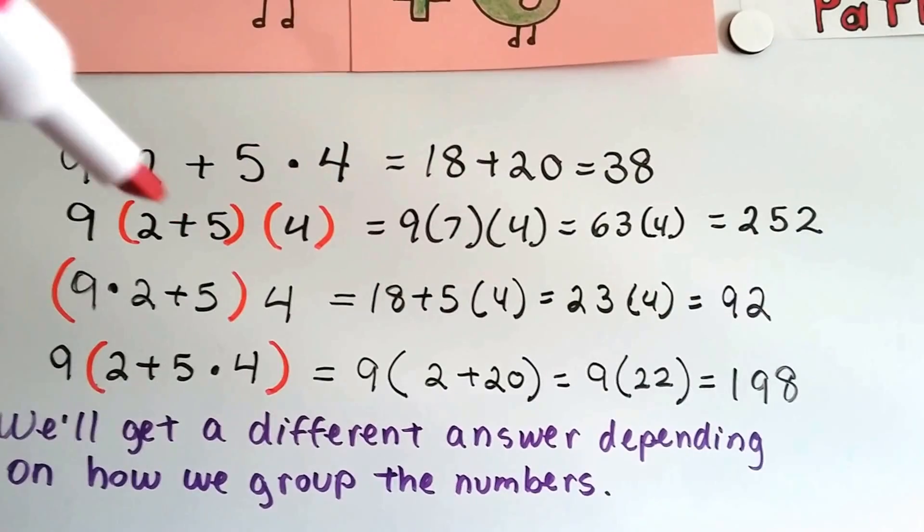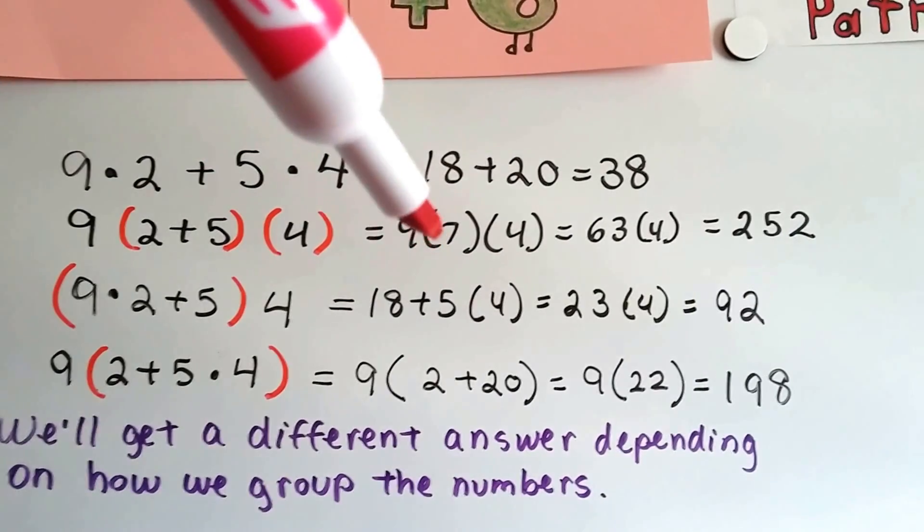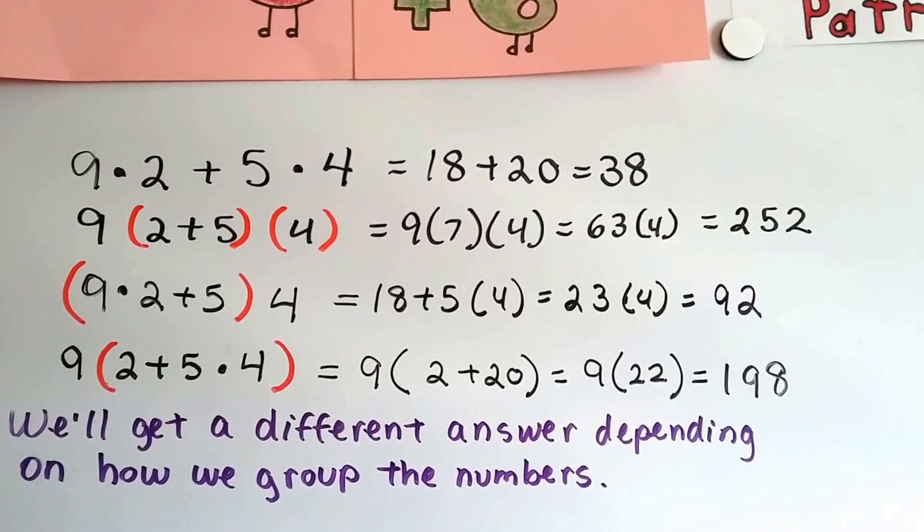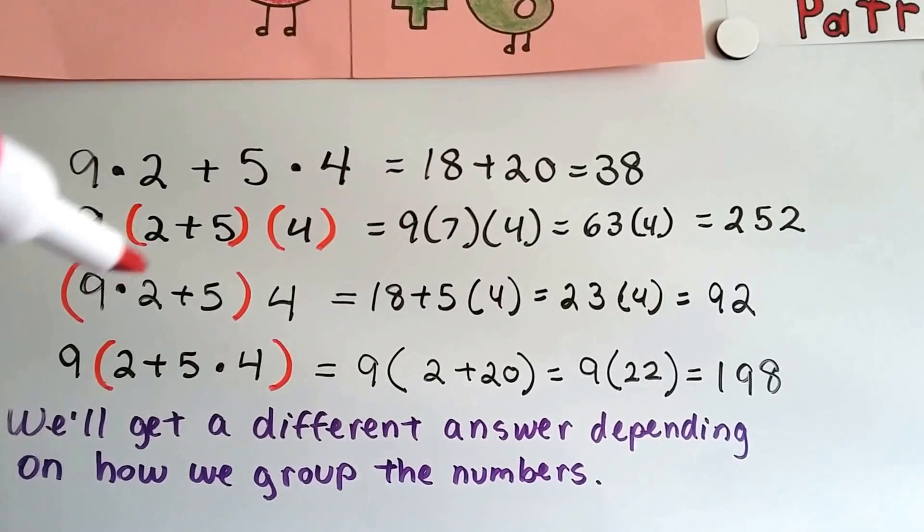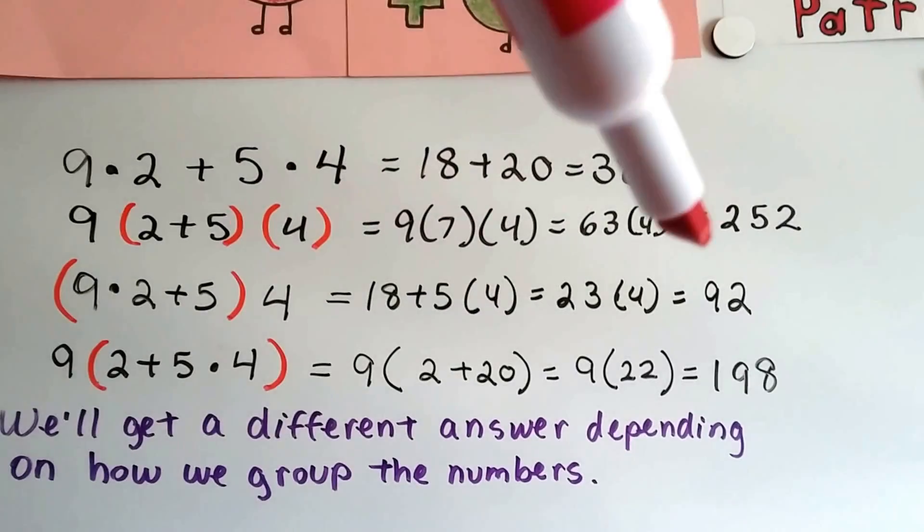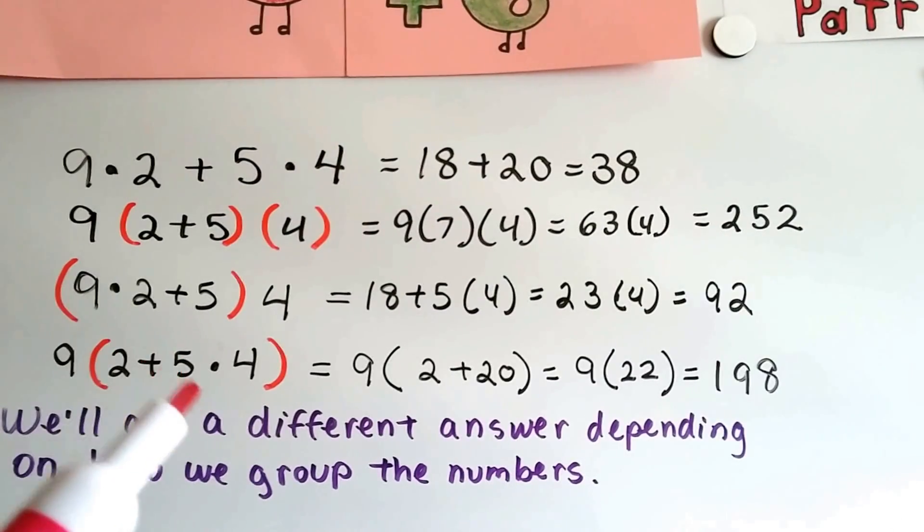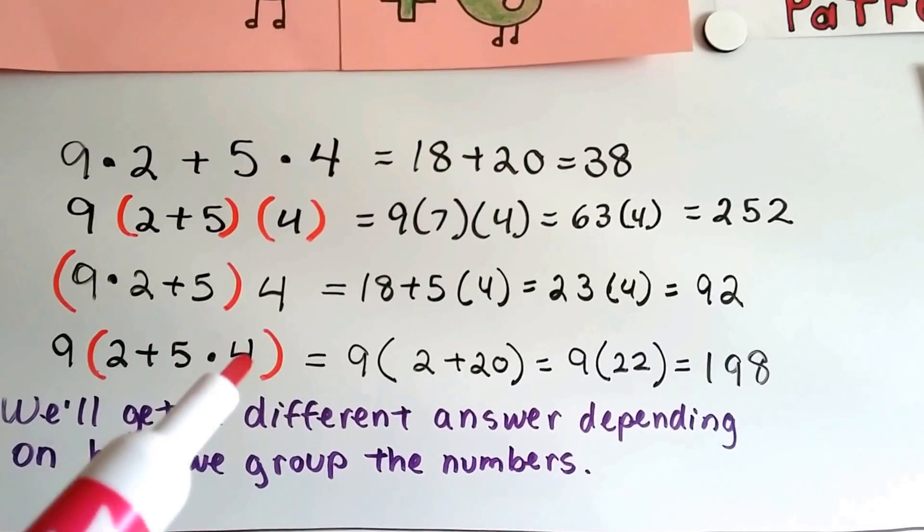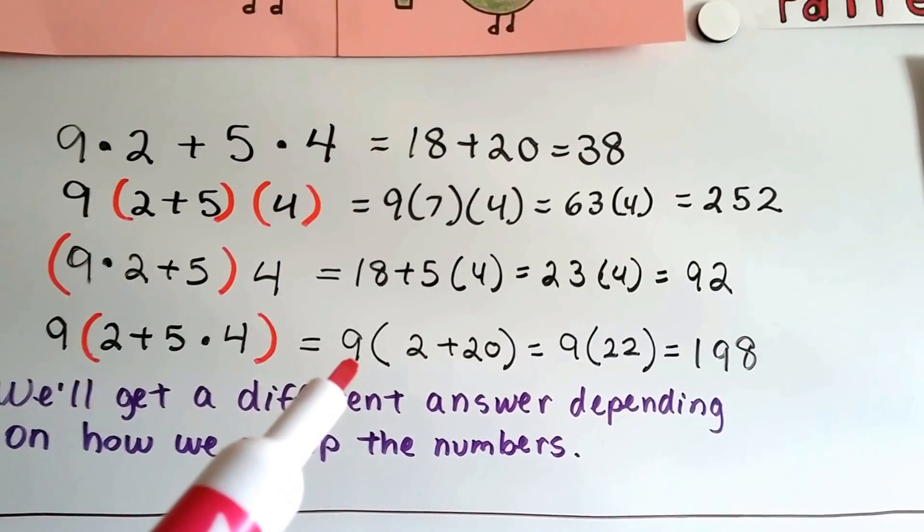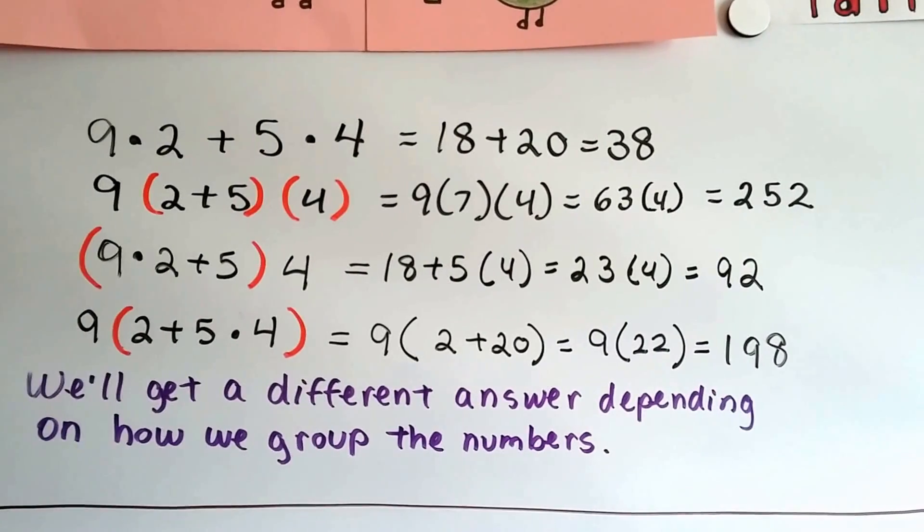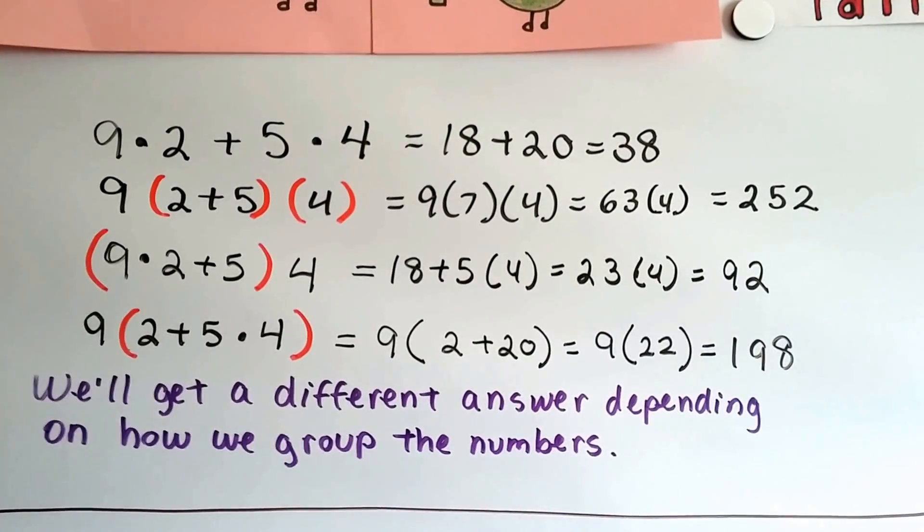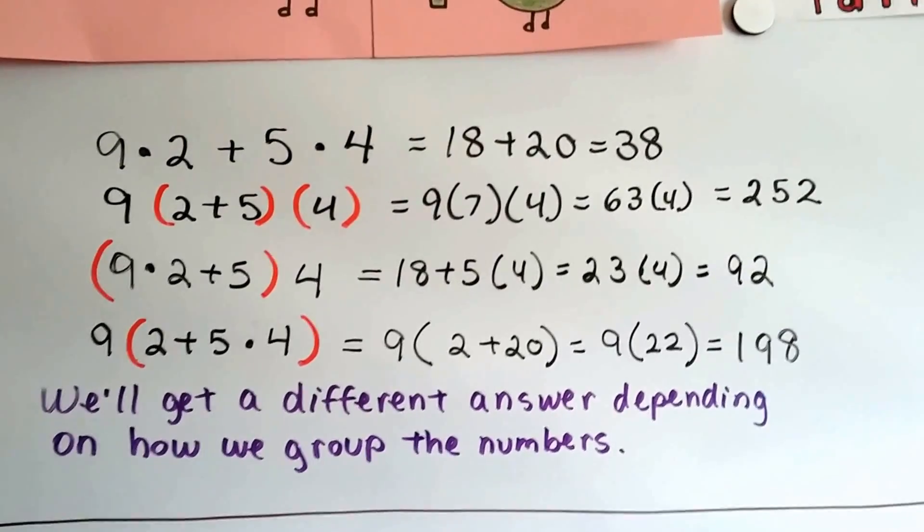2 plus 5 is 7. Now we have 9 times 7, which is 63. We multiply that by 4, we get 252. When we have 9 times 2, which is 18, and we add 5, we get 23 times 4, which is 92. When we have 2 plus a 5 times 4, multiplication first, that's 2 plus 20, we have 9 times 22, which equals 198. Look at four different answers depending on how we grouped it. So it's really important that we group them correctly, okay?